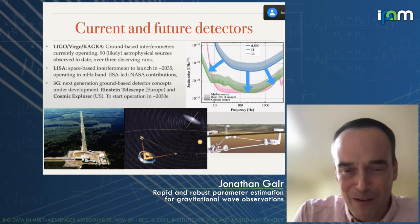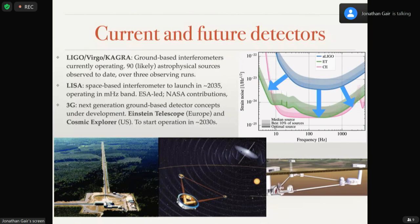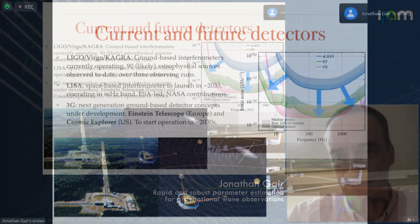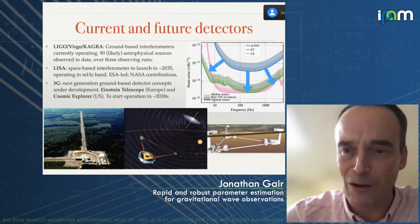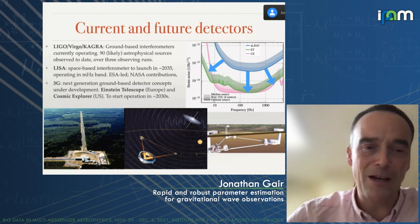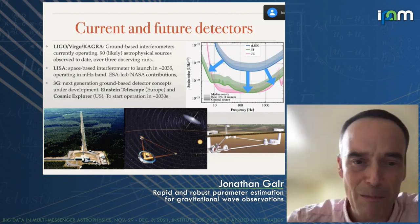Gravitational wave astronomy has exploded as a new field in the last few years, because of the construction of a network of ground-based interferometers. There are currently four active interferometers: the two LIGO detectors in the US, Virgo in Italy, and KAGRA in Japan. LIGO has collected approximately 20 months of data spread over three separate observing runs, and in this data we found 90 sources thought to be most likely astrophysical. The vast majority are mergers of binary black holes, with a couple of binary neutron star events and a few neutron star-black hole binaries.